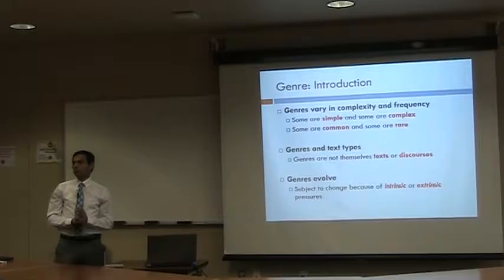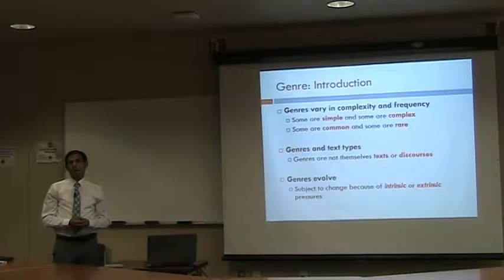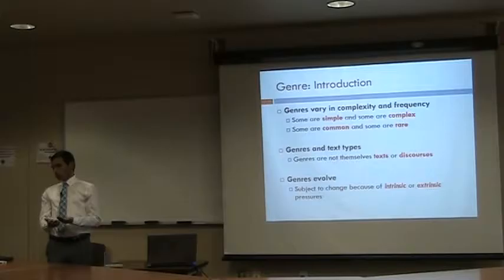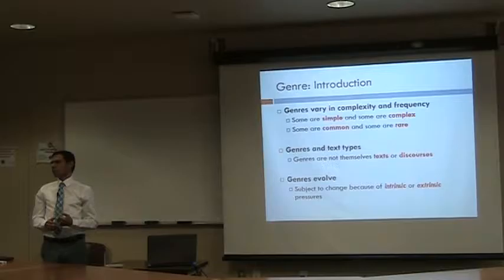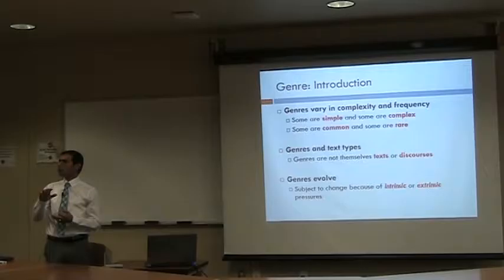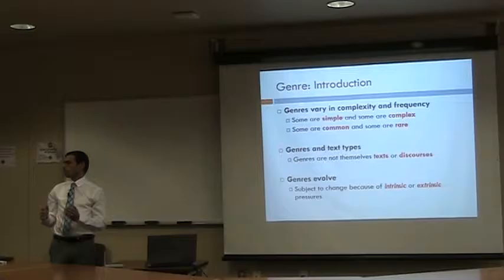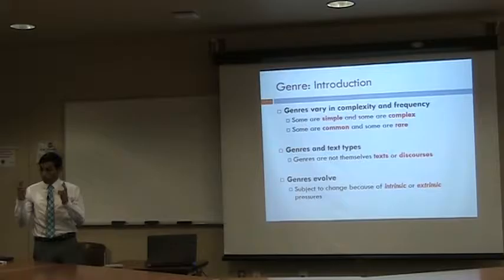Genres also evolve over time, sometimes for intrinsic factors — like a group of people agreeing on certain conventions and then changing them — and sometimes because of extrinsic considerations. For example, in academia when you write a research article, you have word count limitations, you must include only 200 words in the abstract, only five or seven keywords, and you have to add highlights. Swales argues these extrinsic considerations restructure different genre types over time due to external factors.